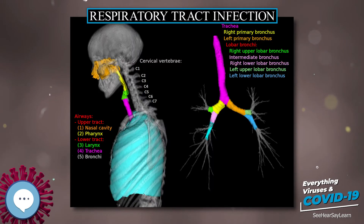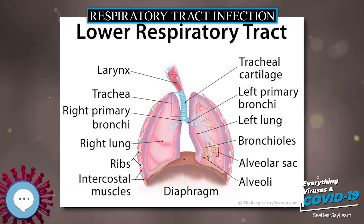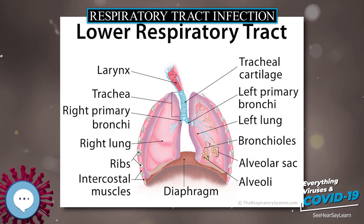Influenza affects both the upper and lower respiratory tracts, but more dangerous strains such as the highly pernicious H5N1 tend to bind to receptors deep in the lungs.